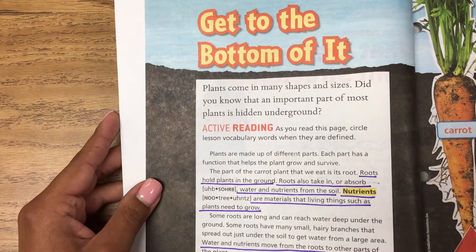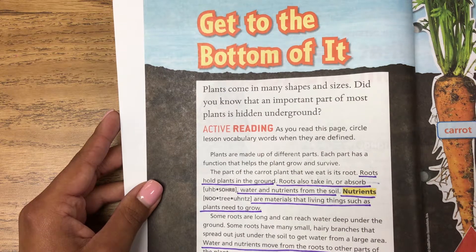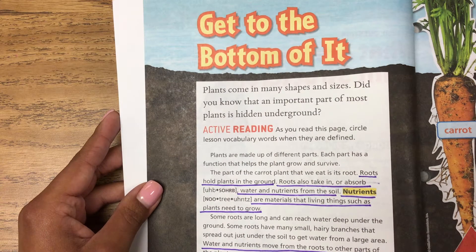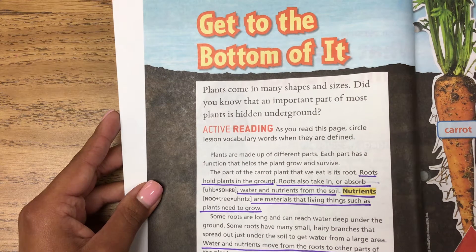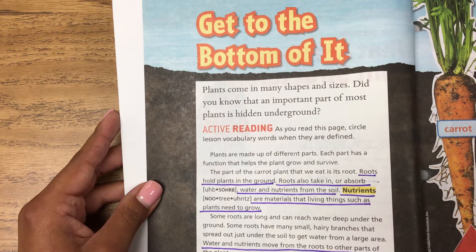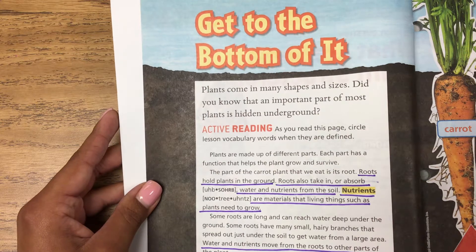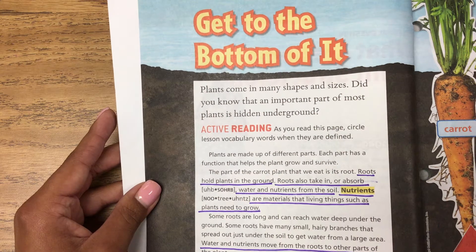Roots hold plants in the ground. Roots also take in, or absorb, water and nutrients from the soil. Nutrients are materials that living things, such as plants, need to grow. Some roots are long and can reach water deep under the ground. Some roots have many small, hairy branches that spread out just under the soil to get water from a large area. Water and nutrients move from the roots to other parts of the plant.